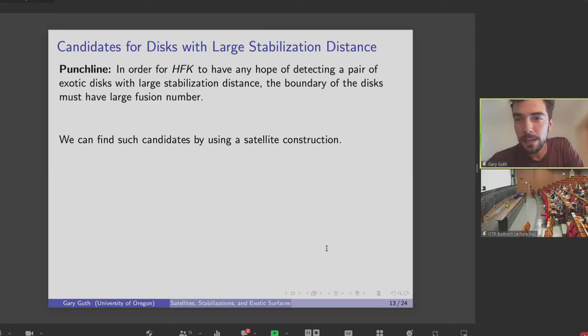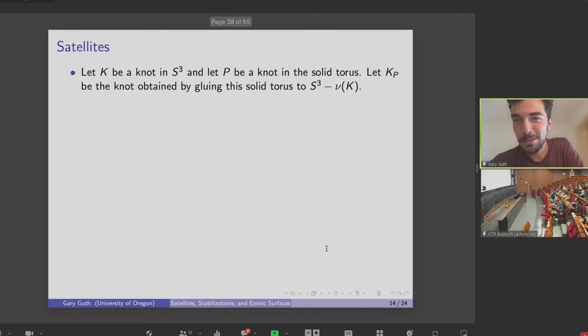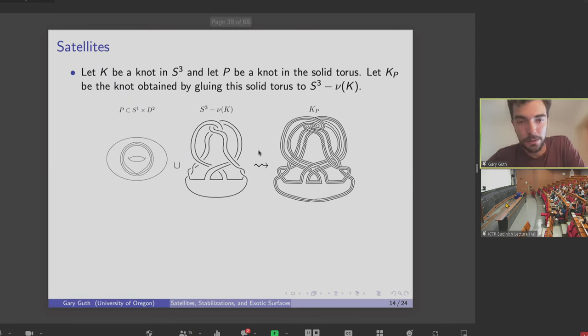And the way we'll find such candidates is by using a satellite construction, which I'll remind you what that is. So here's how satelliting works. You pick a knot in S3, and you choose some pattern knot P, which lives in the solid torus. So here's sort of a cartoony picture of this. I've got this knot that lives in the solid torus. What I do then is I take my knot K that's living in S3. I cut out some neighborhood of that knot. And then I glue in this new knot that I have in the solid torus.